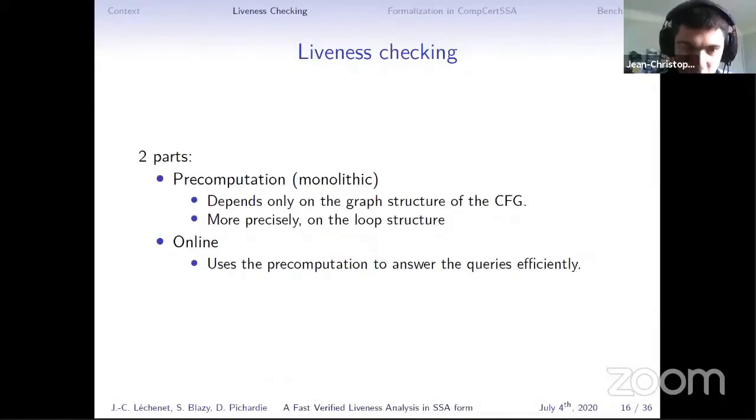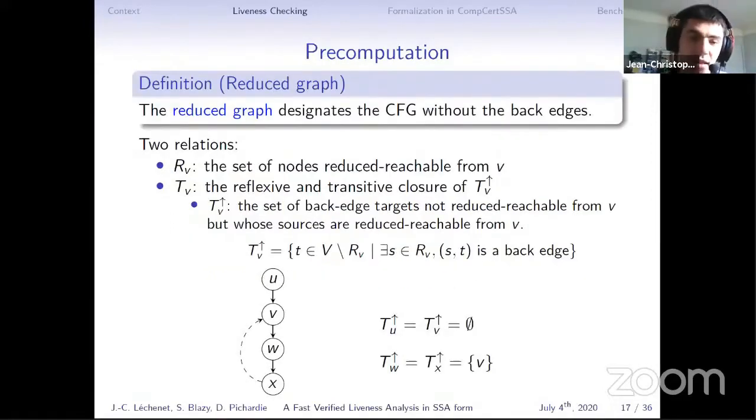Let's get into the core of liveness checking. Liveness checking consists in two parts, like the classic liveness analysis. The precomputation depends only on the graph structure of the CFG, and in particular on the loop structure, but it does not depend on the instruction in the node of the CFG. And the second part is the online part that actually answers the queries, and it uses the result of the precomputation part to answer them efficiently.